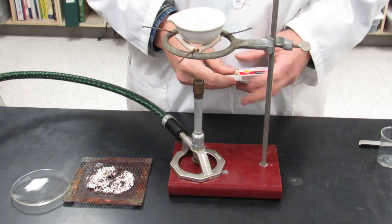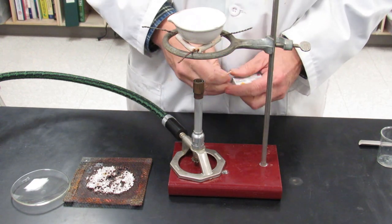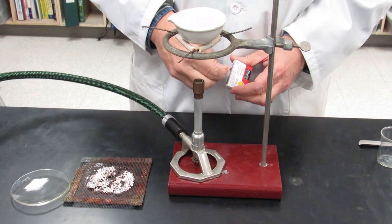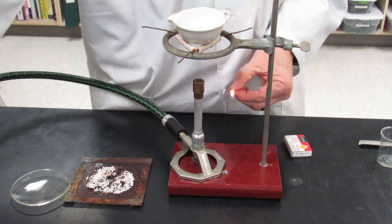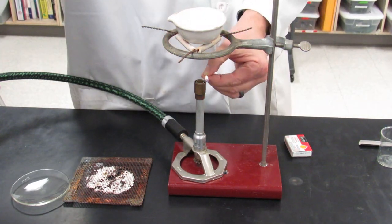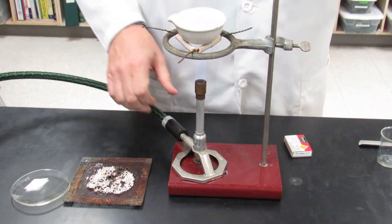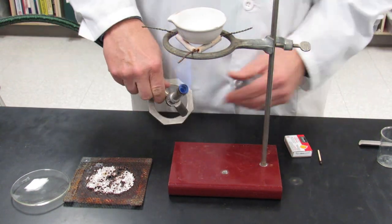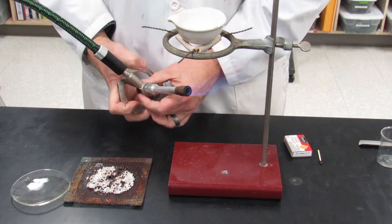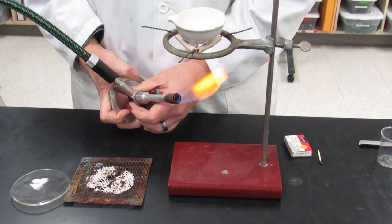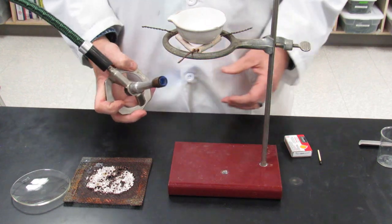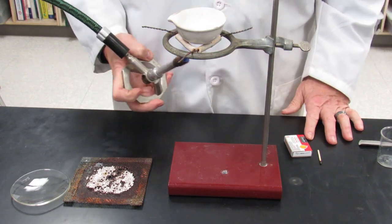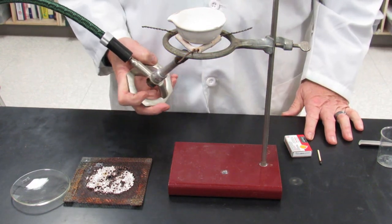Now we need to dry the evaporating dish just like we did in the hydrate lab. So we're going to light the Bunsen burner, light the match first, then turn on the gas, run it aside, and then just like the hydrate lab, we're going to gently run the Bunsen burner flame underneath the evaporating dish to drive off any water that might still be in there.